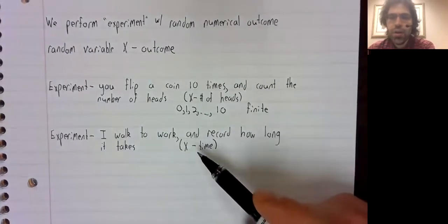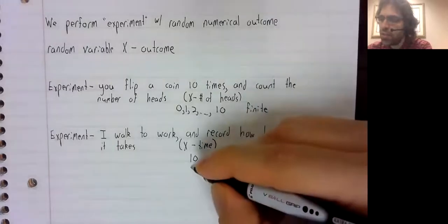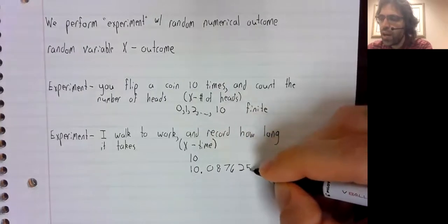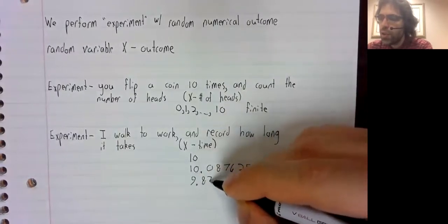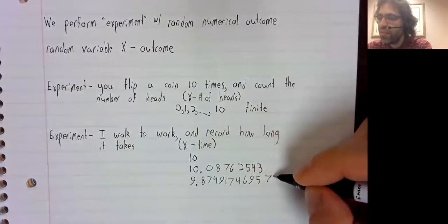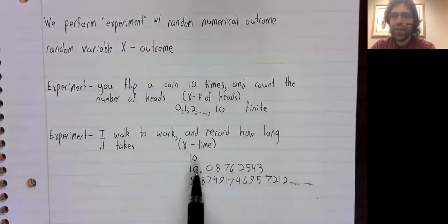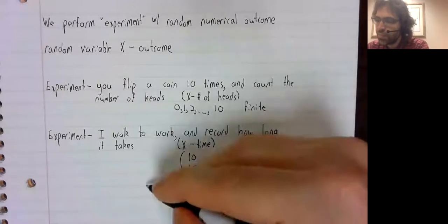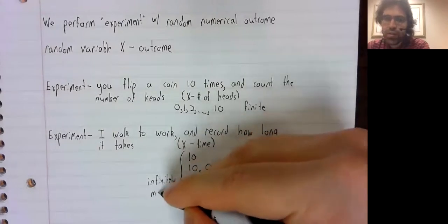Here, there are an infinite number of outcomes. It could take me 10 minutes. Or 10.08762543 minutes. Or 8.87494749572 minutes. We can just keep creating these decimals, and rather than having finitely many possible outcomes, there are infinitely many.